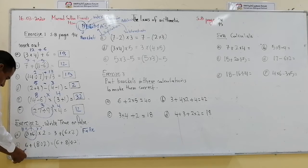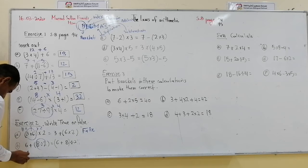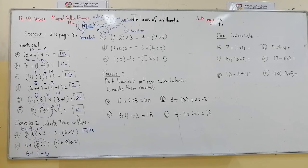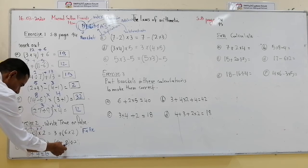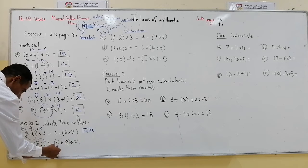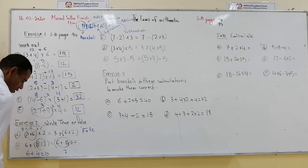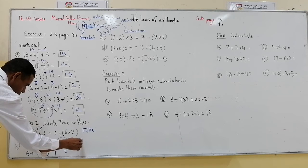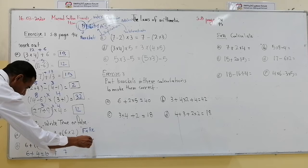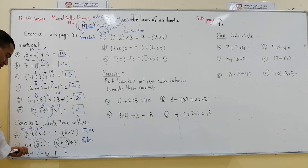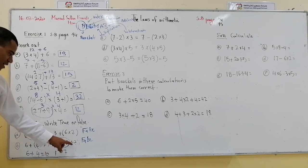The next one: 6 plus (8 divided by 2). I divide first: 8 divided by 2 is 4, so 6 plus 4 gives 10. But on the other side, (6 plus 8) divided by 2 is 14 divided by 2 which is 7. Is 10 equal to 7? No — this is false, because we should calculate what is inside the brackets first.